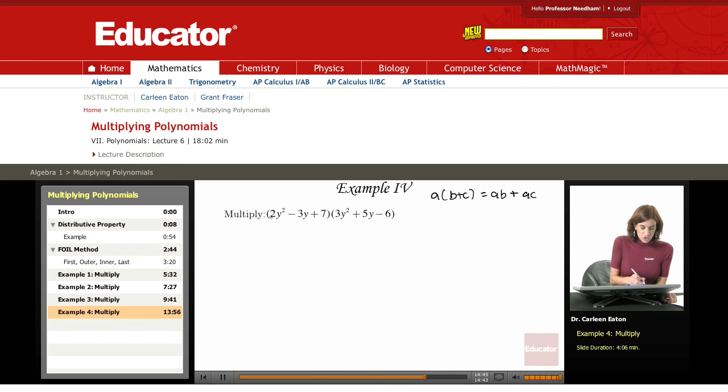If I have this first term, 2y squared times 3y squared, 2 times 3 is 6, 2 plus 2, that gives me 6y to the fourth. Again, if you need to write out 2y squared times 3y squared, do that step. Eventually, you'll do it this way though. Then I have 2y squared times 5y. 2 times 5 is 10. Y squared and y gives me y cubed. 2y squared times negative 6 is negative 12y squared. That took care of this.